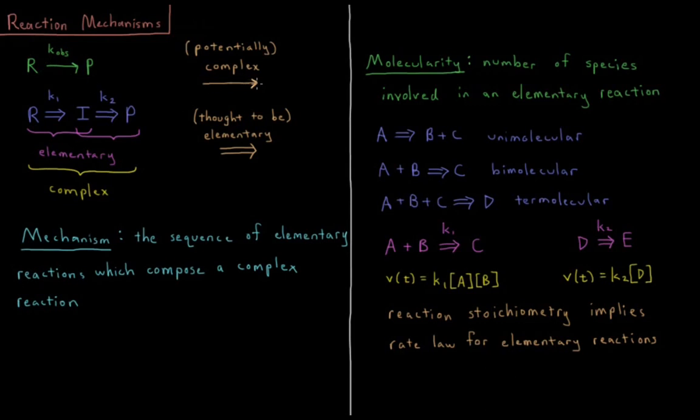So I say potentially complex for that single arrow because kinetics is complicated and sometimes things aren't always what they seem. In most cases we're just deriving things from empirical relationships and hoping that we've got the right idea. And in the case of elementary steps, once again, it's something that is thought to be elementary, but who knows what may be discovered in the future.